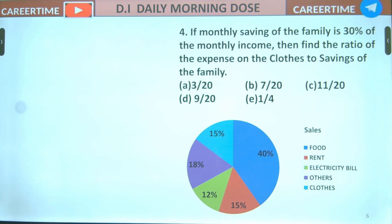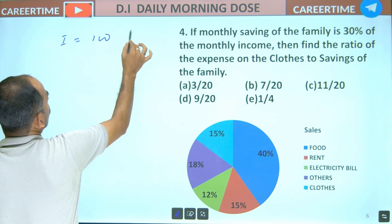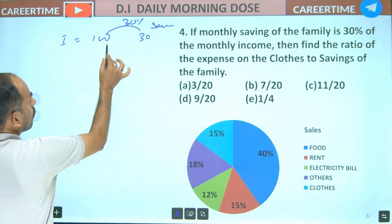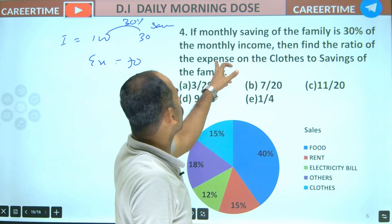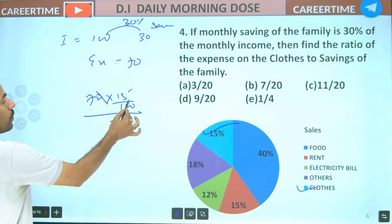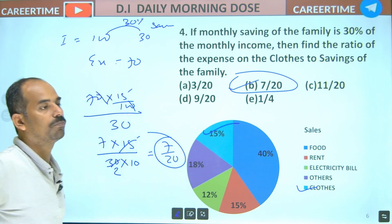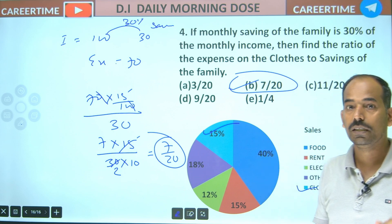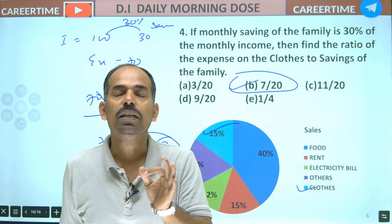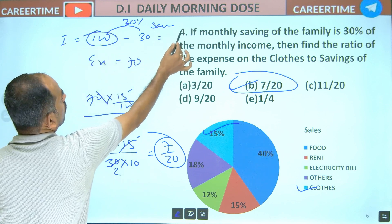If the monthly saving of the family is 30% of the monthly income, find the total monthly income. Then find the ratio of the expenditure on clothes to the saving of the family. You will have savings which is 30%. The ratio of the cloth is 15%. If you have savings of $30, you will have savings of $30.